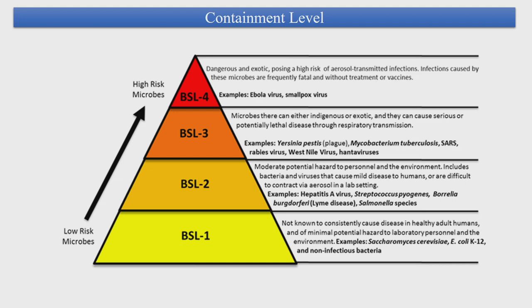According to the pathogen being handled, labs are divided into BSL-1 through BSL-4. BSL-1 pathogens can be managed on the bench side only. BSL-2 has moderate risk — pathogens can cause mild infections and are difficult to contract via aerosol transmission. BSL-3 and BSL-4 require containment facilities and must be handled in a biosafety cabinet. BSL-3 pathogens can cause serious and potentially lethal disease through respiratory transmission. BSL-4 pathogens are those that can be frequently fatal, with no treatment or vaccine currently available.